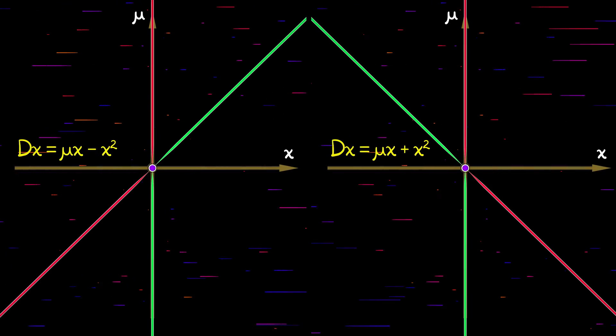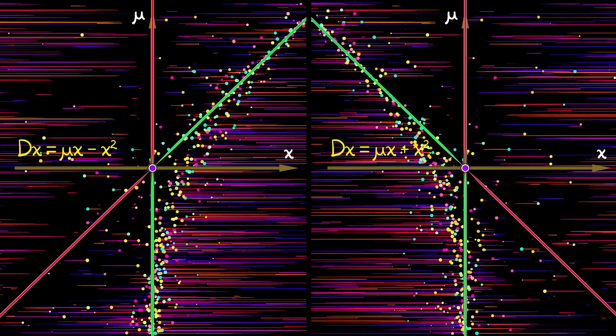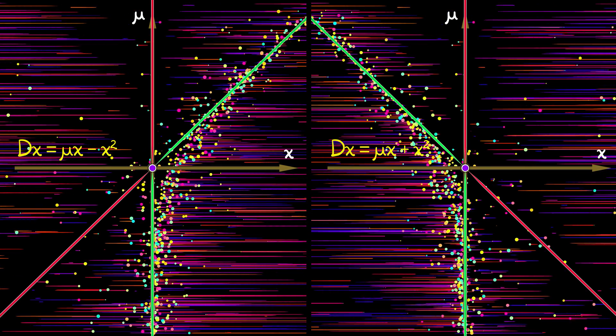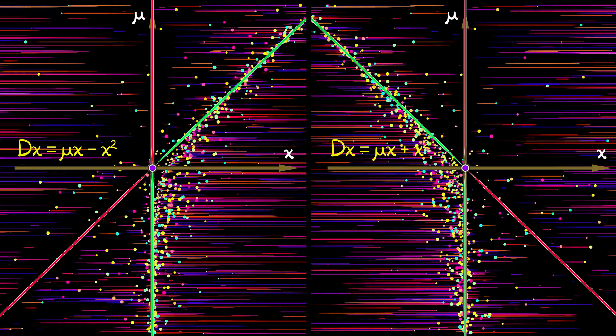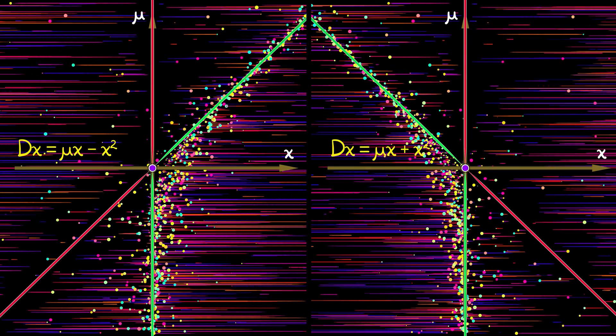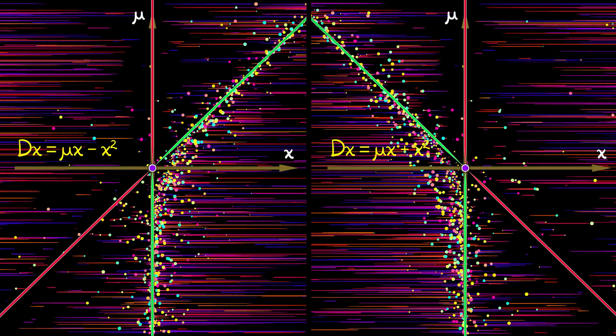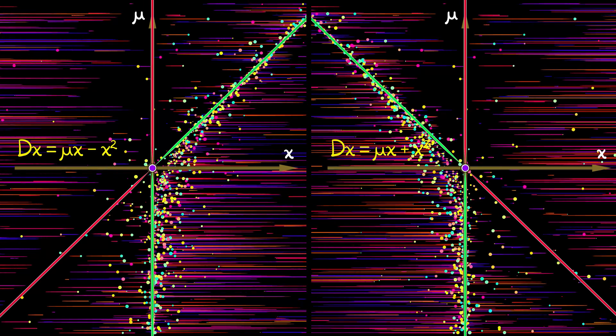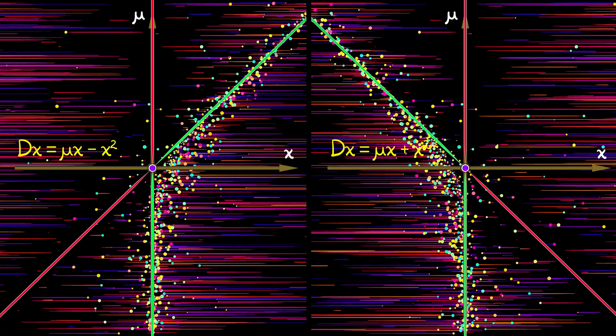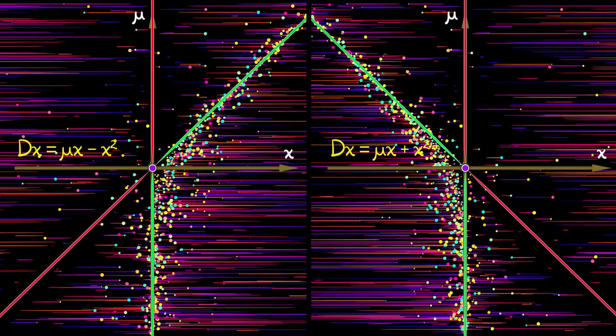If we take the transcritical bifurcation, do the same thing. Look at what happens when c is negative versus what happens when c is positive. We go from two equilibria, a stable unstable pair, to two equilibria, a stable unstable pair with stabilities switched. There's no real change.